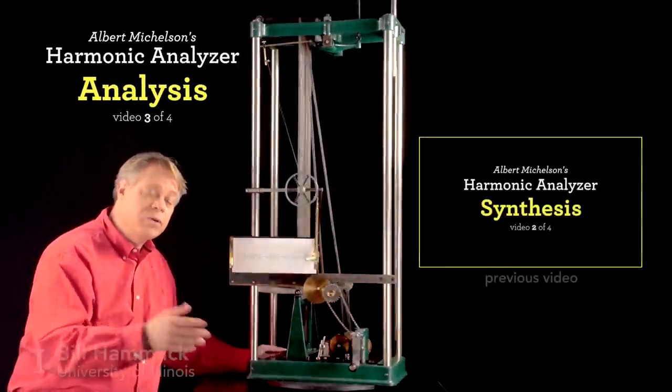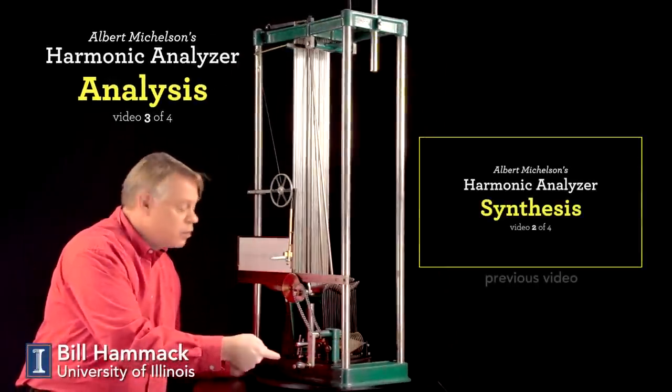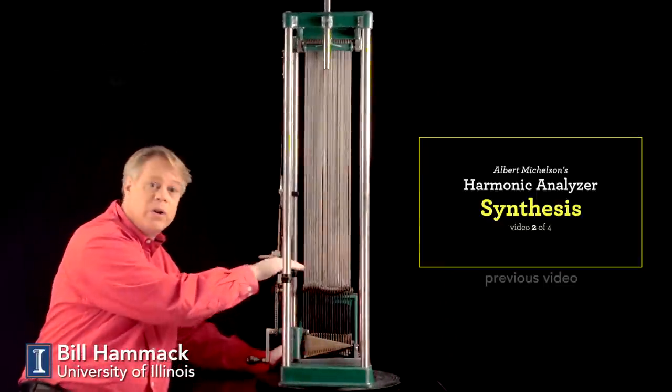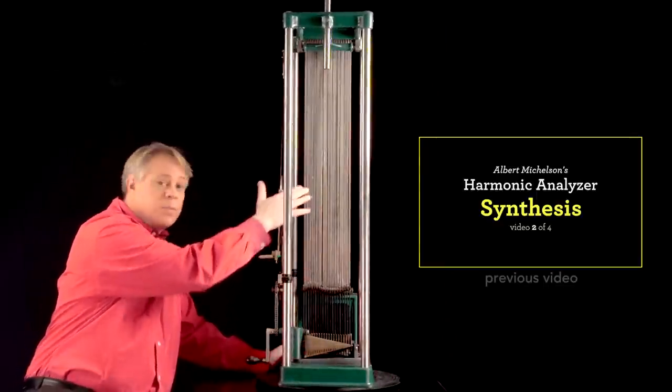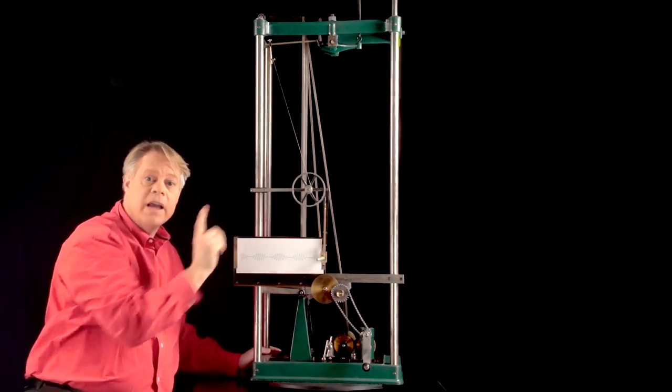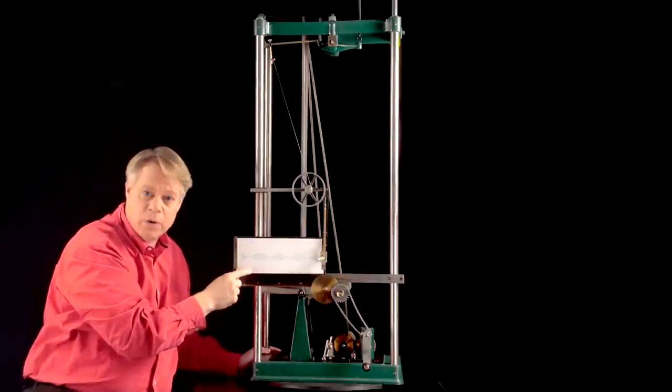In the previous video, I showed how turning the crank on this machine generates 20 different frequencies, also known as harmonics, which are turned into cosines here, multiplied by coefficients, then summed, magnified, and the resulting function plotted here on the front.